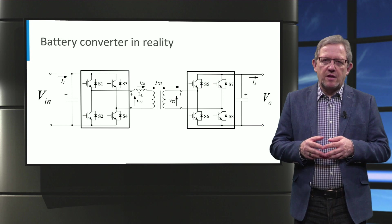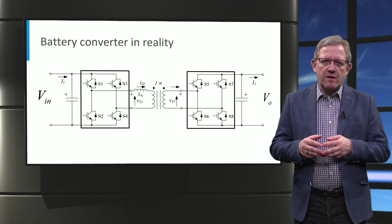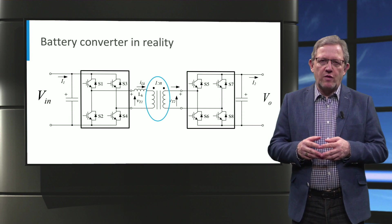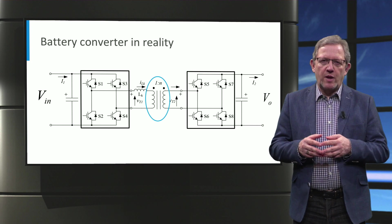In reality, the battery converter is much more complex. If isolation is needed between the input and output, a dual-active bridge converter with a high-frequency transformer can be used.